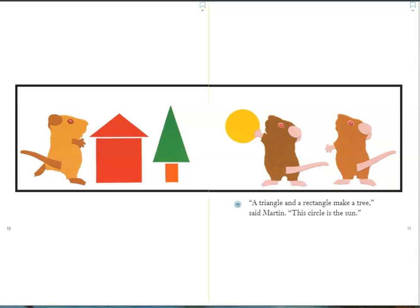"A triangle and a rectangle make a tree," said Martin. "This circle is the sun."